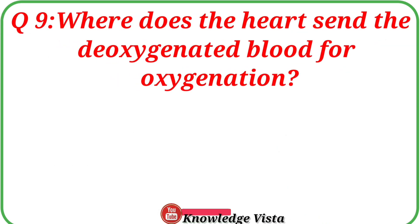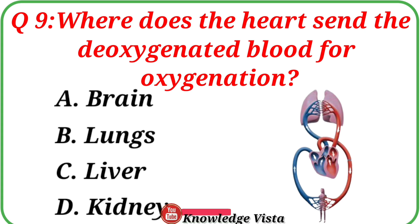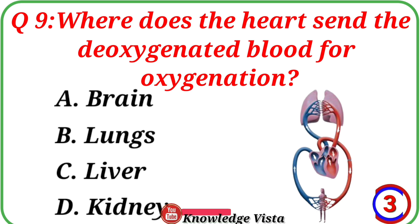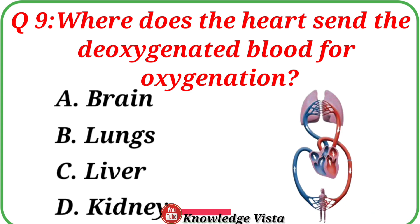Question No. 9. Where does the heart send the deoxygenated blood for oxygenation? Your options are: A. Brain, B. Lungs, C. Liver, D. Kidney. Correct answer is option B: Lungs.